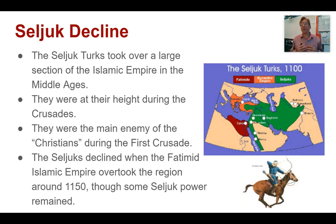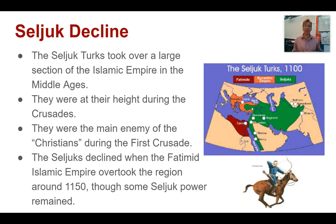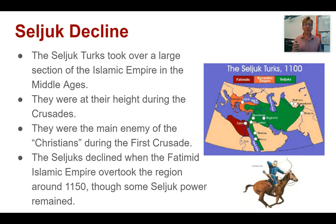Let's talk about the Seljuk Turks. The Seljuk Turks are the first Islamic group to really threaten the empire as a whole. By 1100 AD, the Seljuk Turkic Empire — this Muslim empire — had really taken over a large chunk of the Middle East and was pushing into the Anatolian Peninsula right here, approaching Constantinople itself. The Seljuks were at their height during the Crusades, which were mostly fought against the Seljuk Turks. They were the main enemy of Christians during that first crusade.